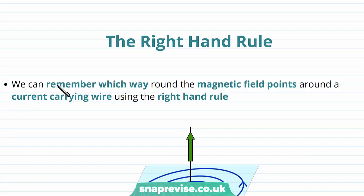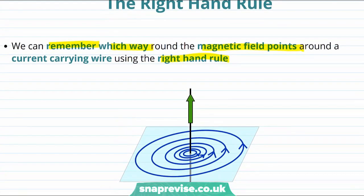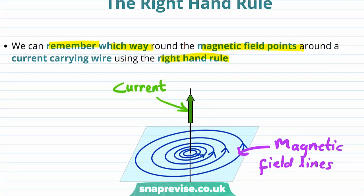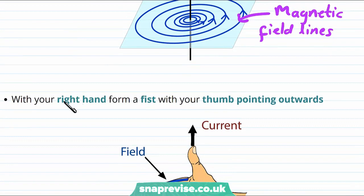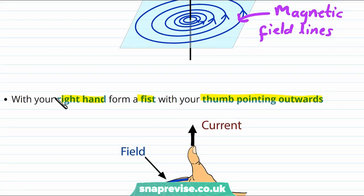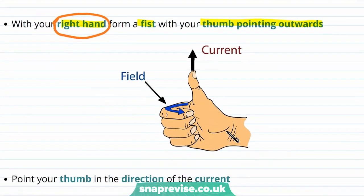We can remember which way round the magnetic field points by using the right hand rule. Remember first that this arrow here represents the current and the lines here are the magnetic field lines. We remember which way round these field lines point in the following way. With your right hand form a fist with your thumb pointing outwards, and it is very important here that we use our right hand.